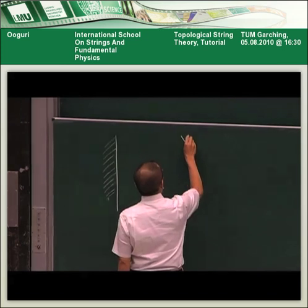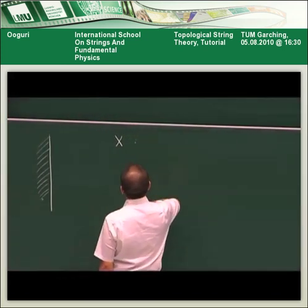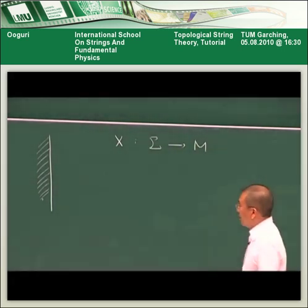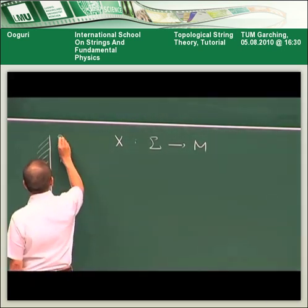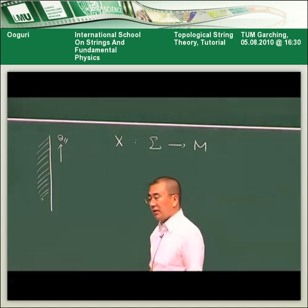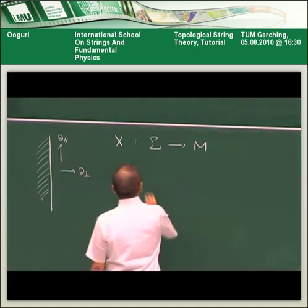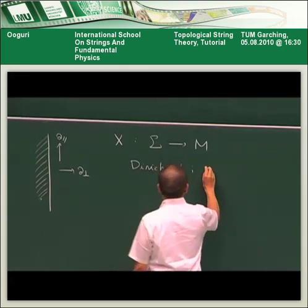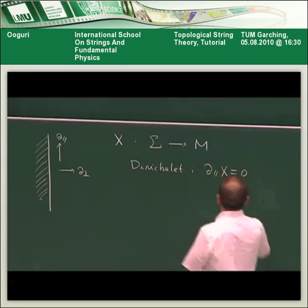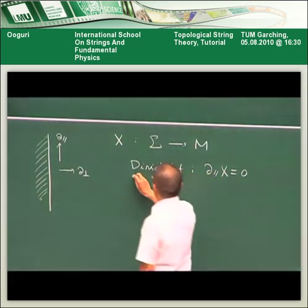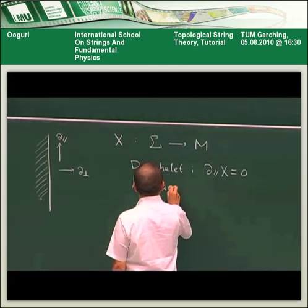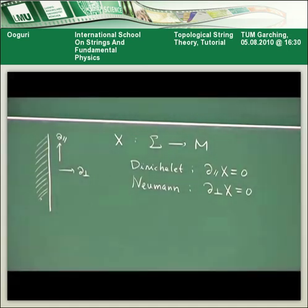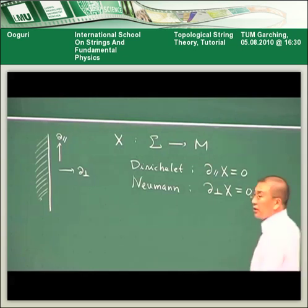For example, if you have worldsheet coordinate X, the bosonic string variable X which maps worldsheet to some target space, then if you have a derivative operator on the worldsheet along the boundary which I denote by del parallel, the Dirichlet condition can be written as derivative of X along the boundary equal to zero, whereas Neumann boundary condition should be the derivative of X along a transverse normal to the boundary equal to zero.